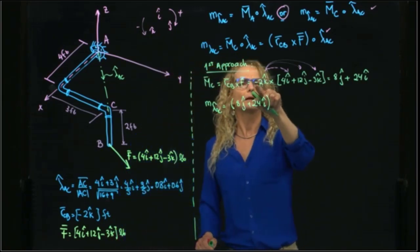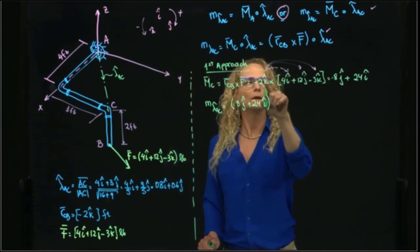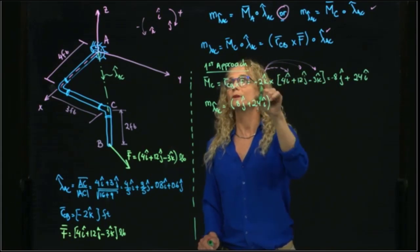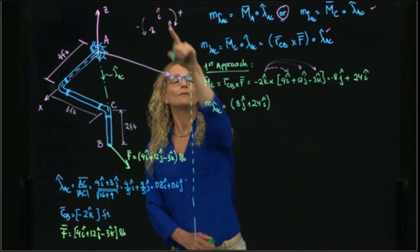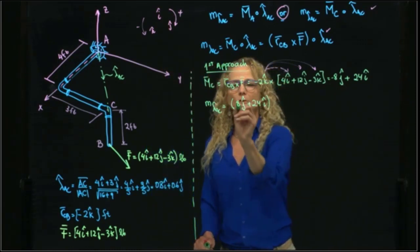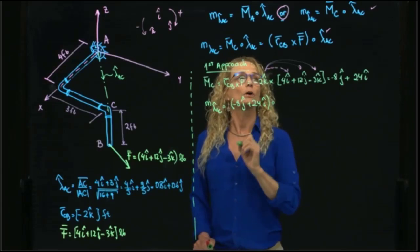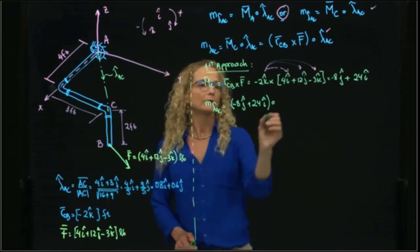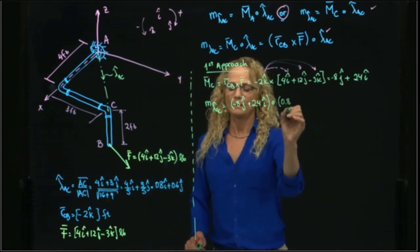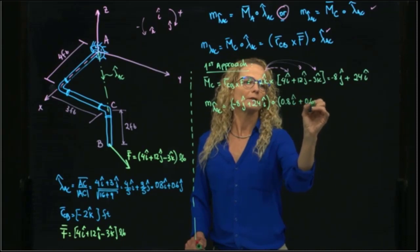Oh, I forgot this negative because it's k times i is positive, but over here we have a negative. Just reviewing is always very important to review. K times j is negative i, with this negative we get positive. So this is a negative value over here.